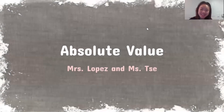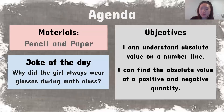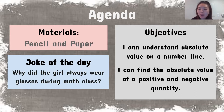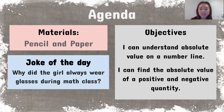Hello everyone! Missy here again today and we will be talking about absolute value. So on our agenda for today we have our materials, joke of the day, and objectives. The objectives are: I can understand absolute value on a number line, and I can find the absolute value of a positive and negative quantity. At the end of the lesson we'll be able to do all of that.